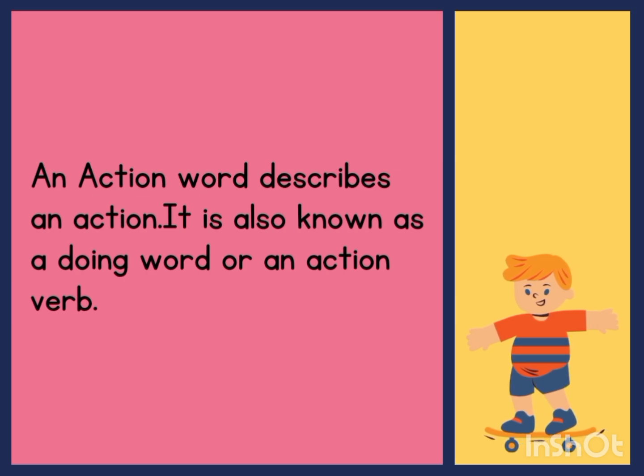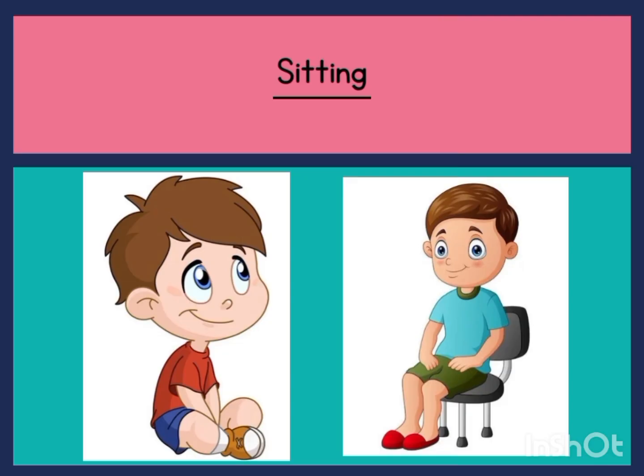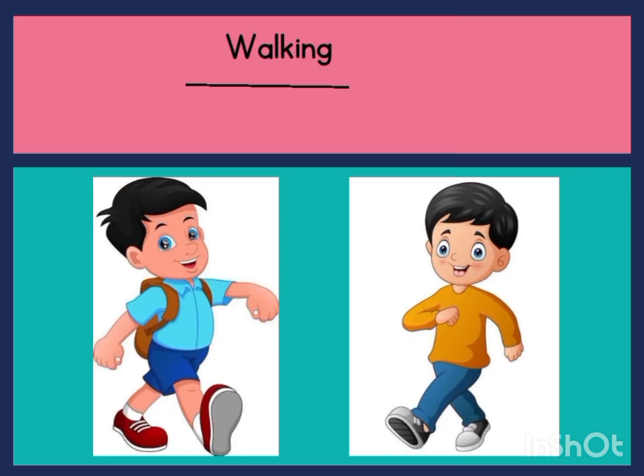So an action word describes an action. For example, sitting. You could see pictures of kids sitting here. They are sitting. Sitting is an action word — you are performing an action. Sitting. Walking — they are performing an action, so they are walking. Walking is an action word.